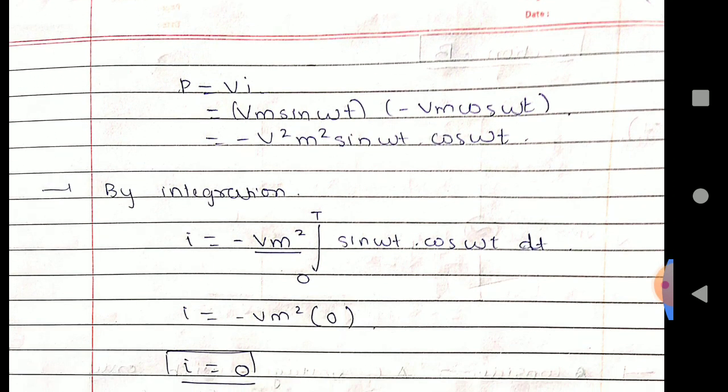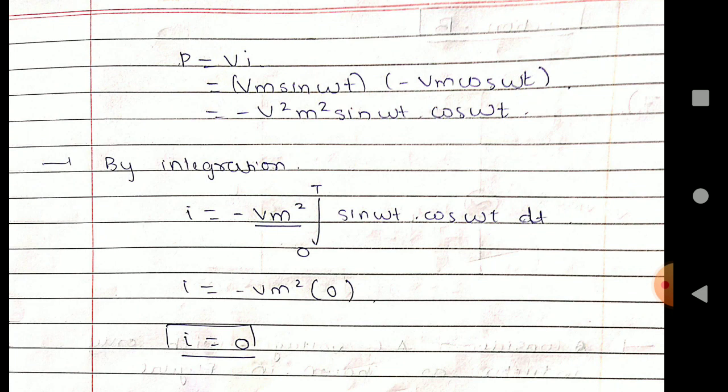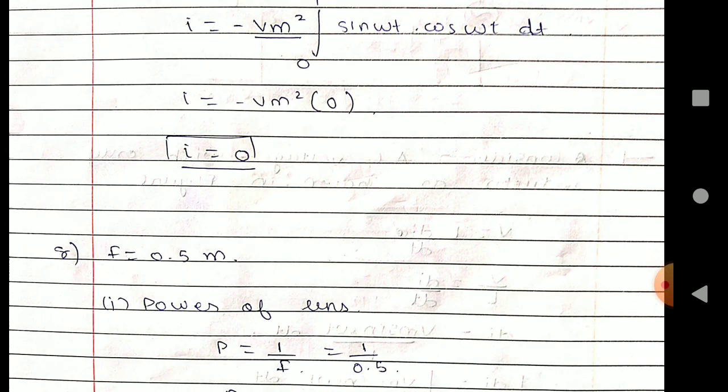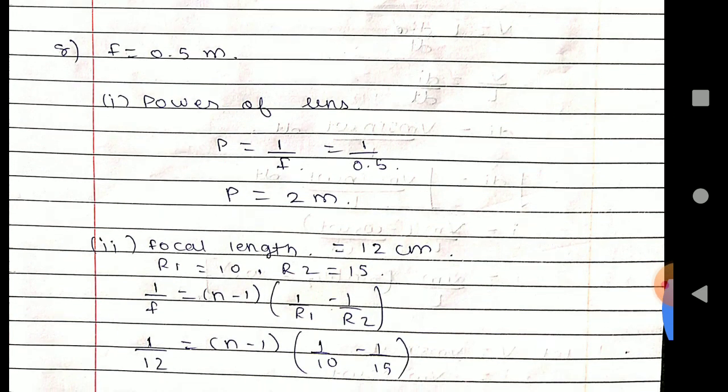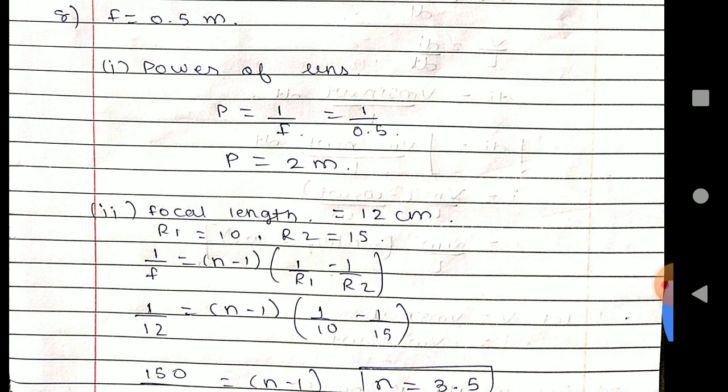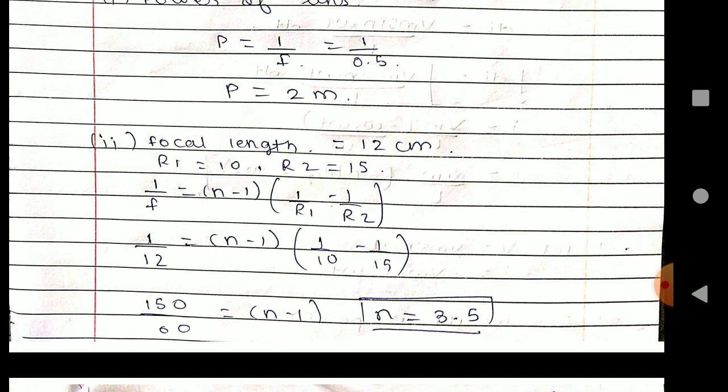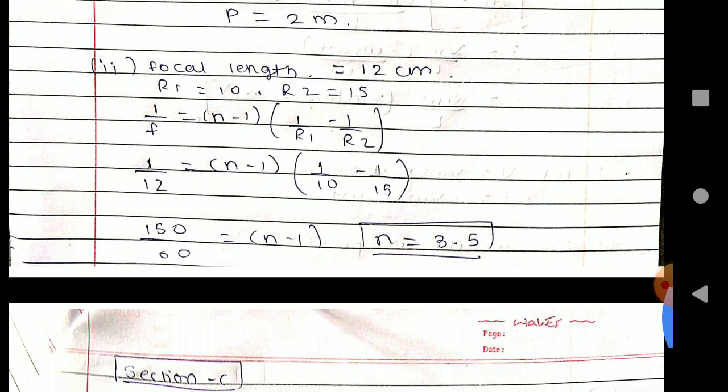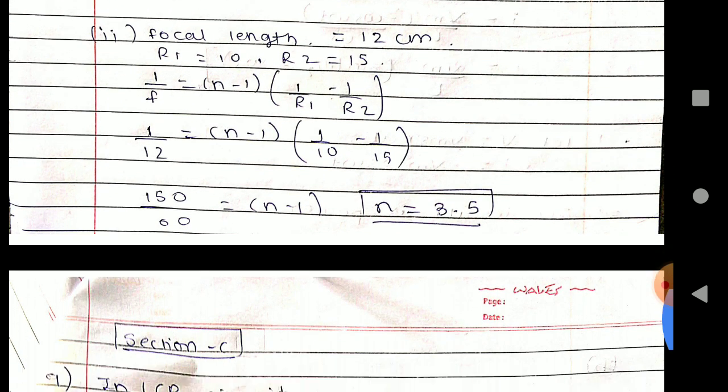By integration you got it. Question number eight: Again here you got 1/2, 2/3. In question it is given power of lens P equals 1 upon f, that equals 1 upon 0.5, P equals 2 meter. Focal length equals 12 centimeter, r1 equals infinity, r2 equals 15.